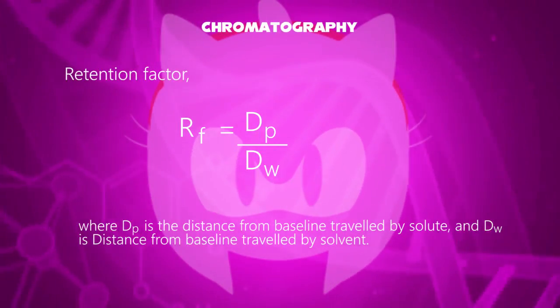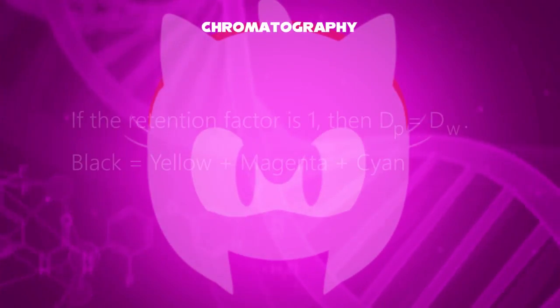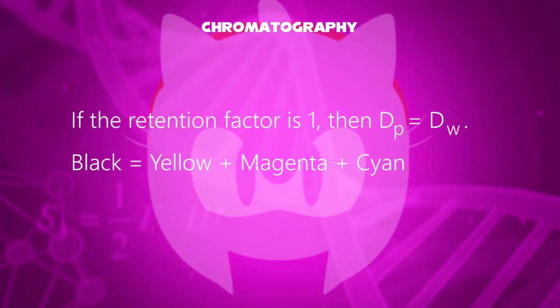This depends on various primary colors which seem to be separable. If the retention factor is calculated as one, then Dp for the solute equals Dw for the solvent. So we have three colors: yellow, magenta, and cyan.